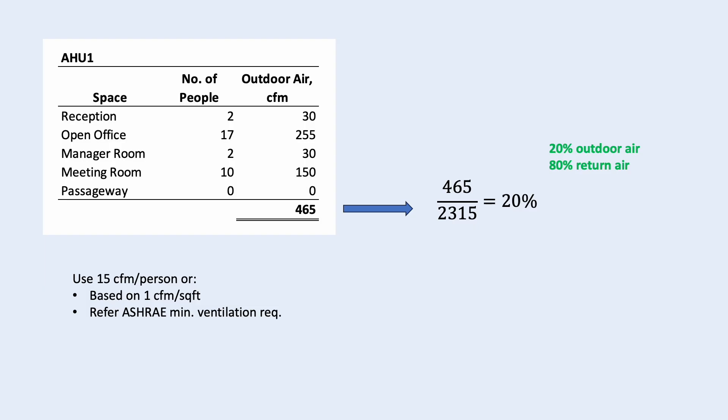So, as a result, the return air ratio is 80%. Since the outdoor air temperature is 95 degree Fahrenheit and the return air temperature is 78 degree Fahrenheit, the mixed air temperature can be calculated.